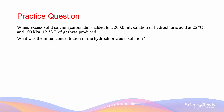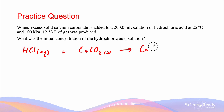Our next question reads: when excess solid calcium carbonate is added to a 200 mL solution of hydrochloric acid at 25 degrees Celsius and 100 kPa, 12.53 liters of gas was produced. What was the initial concentration of the hydrochloric acid solution? We begin by writing the equation: HCl(aq) + CaCO₃(s) → CaCl₂ + H₂O + CO₂(g).